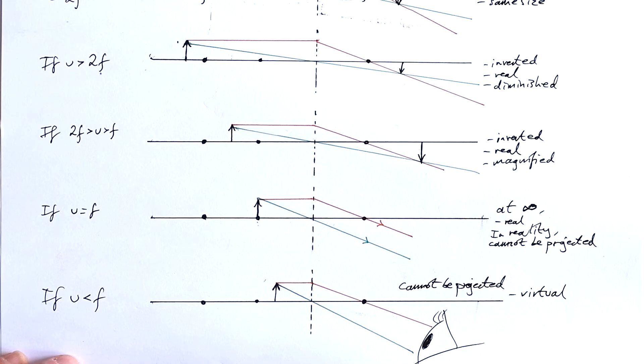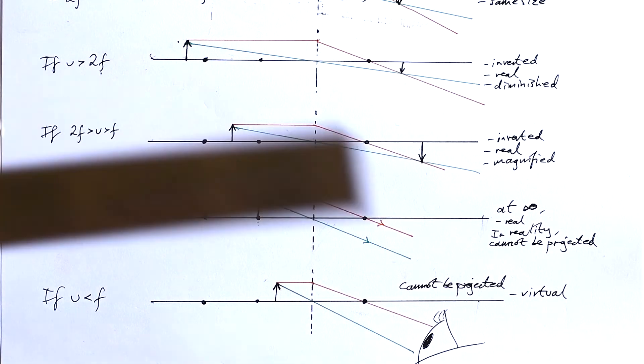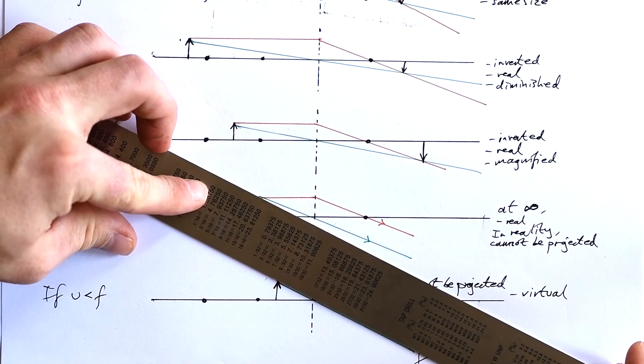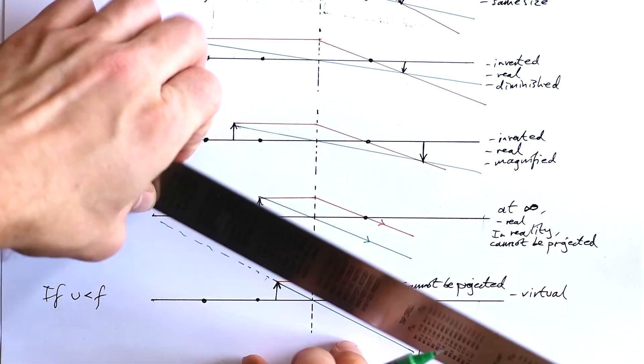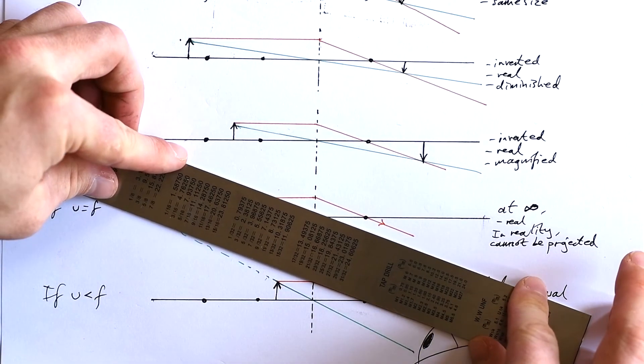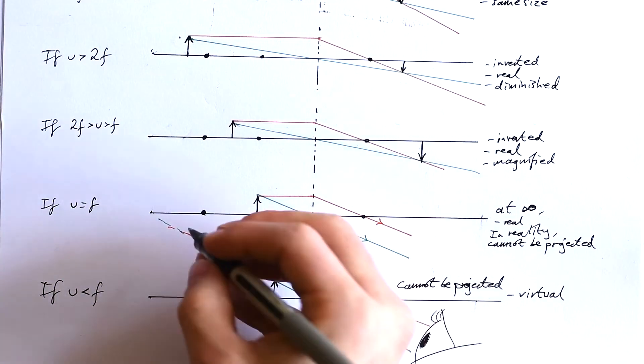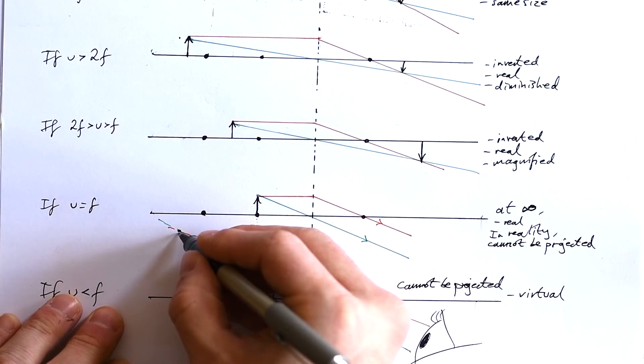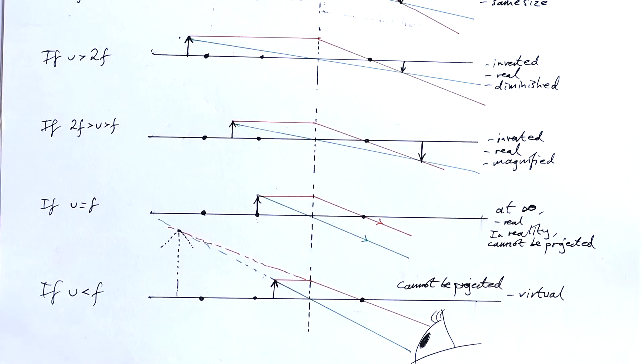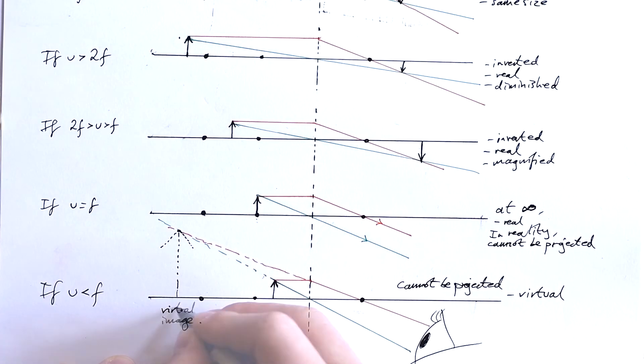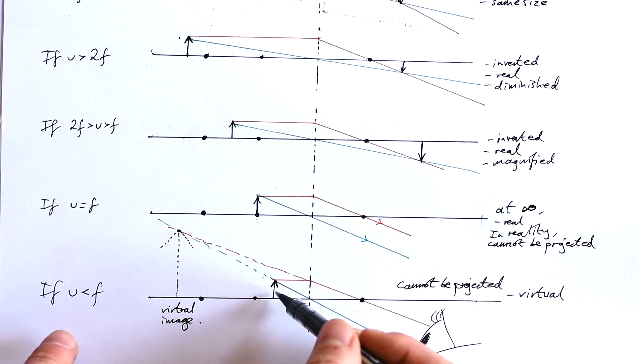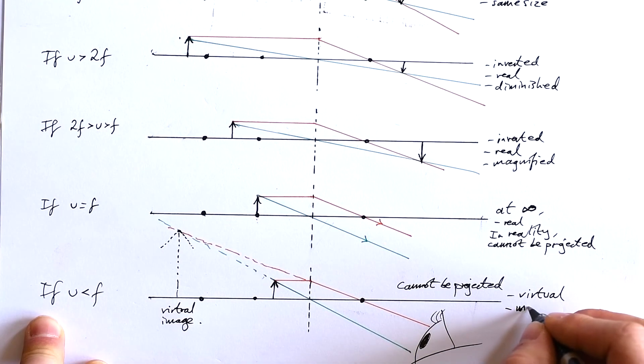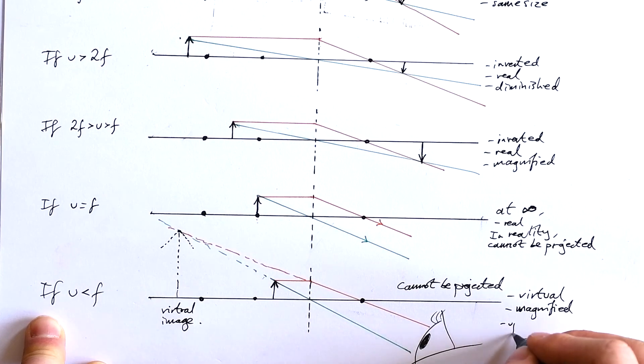With just a screen, we can't project it, but we can see an image. Where is this image seemingly formed? It's where the two light rays meet. We extrapolate our two lines back and see they meet at this point. Theoretically, this is where the image is formed. That's our virtual image. To us, it looks like the object is over here and really big. It's magnified and also upright.